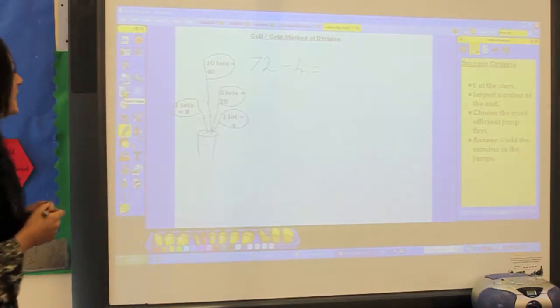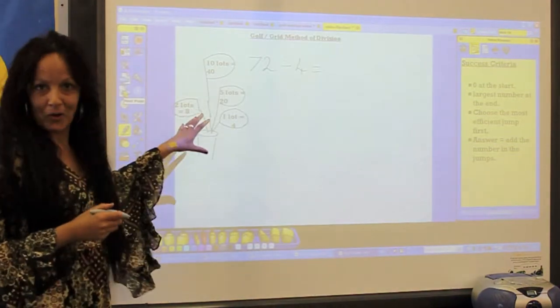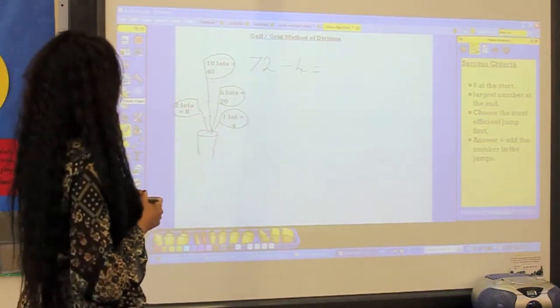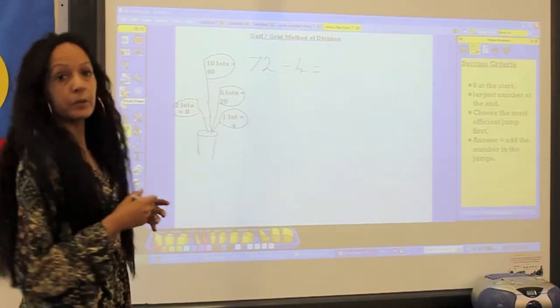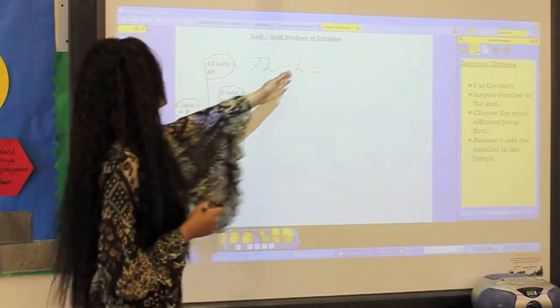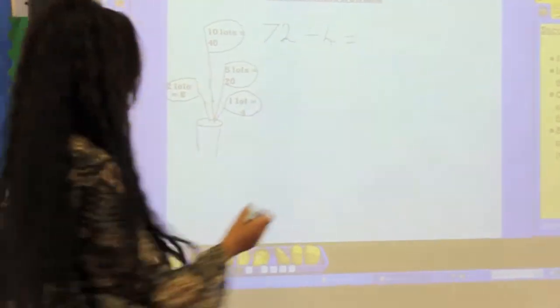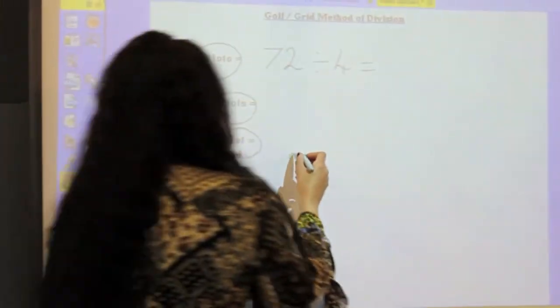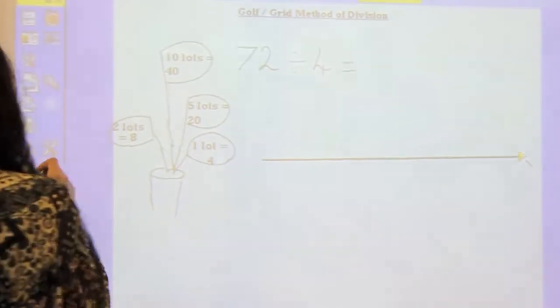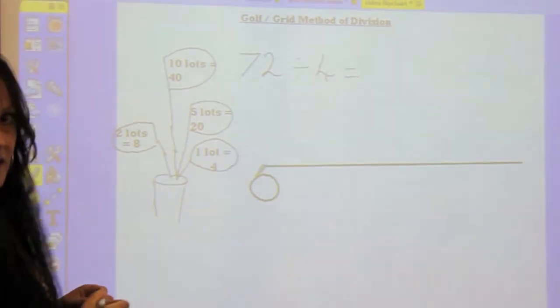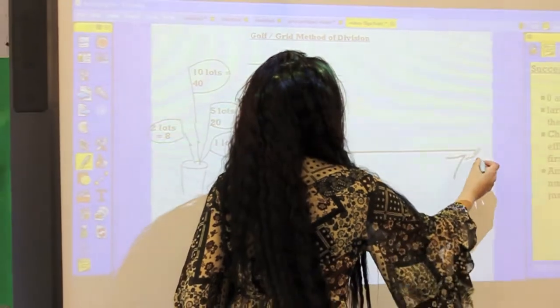Then what you do is you draw a set of golf clubs, and within these golf clubs you put multiples of the dividing number. So in this example, multiples of four. So again, your number line: zero at the start, 72 at the end.